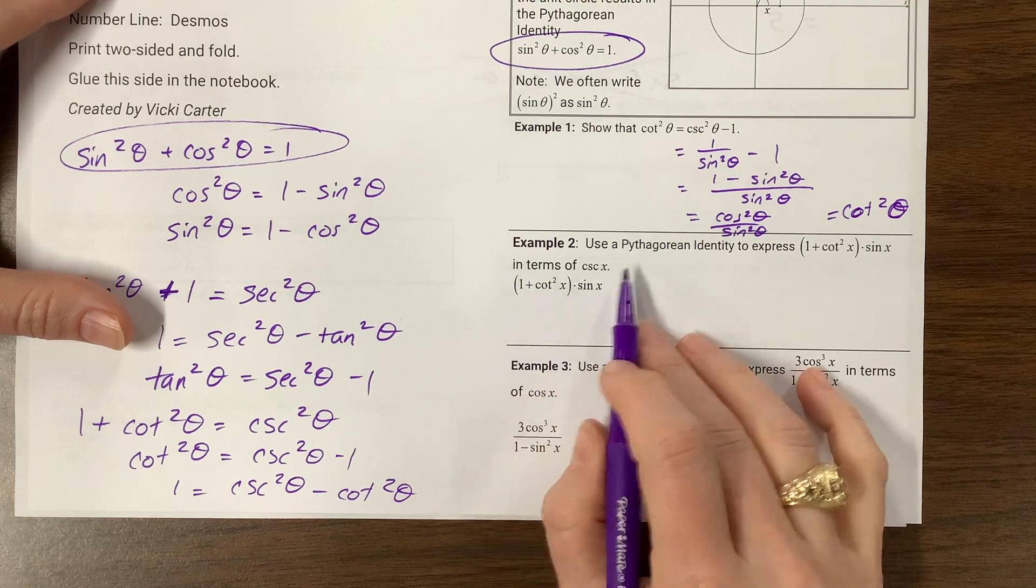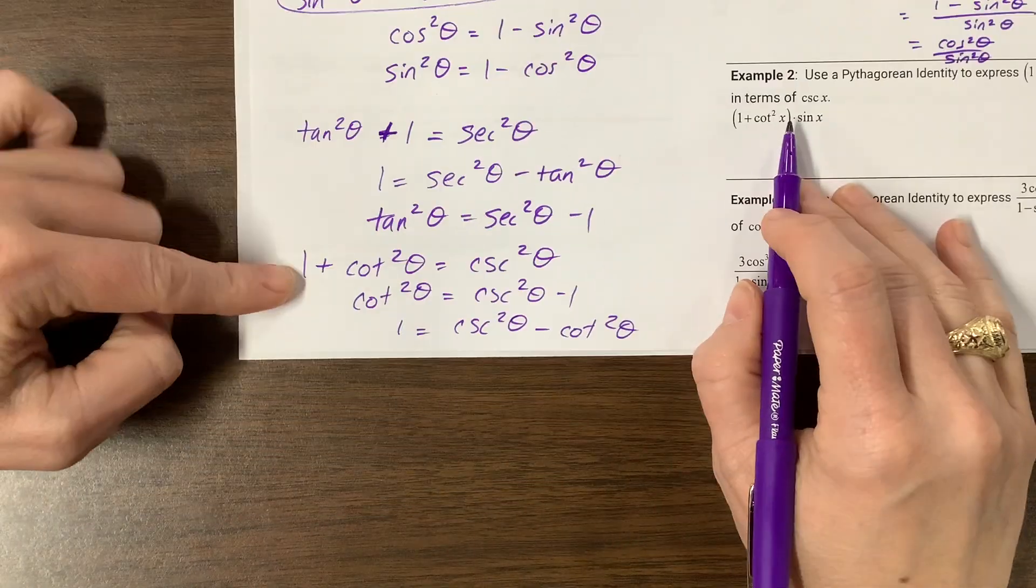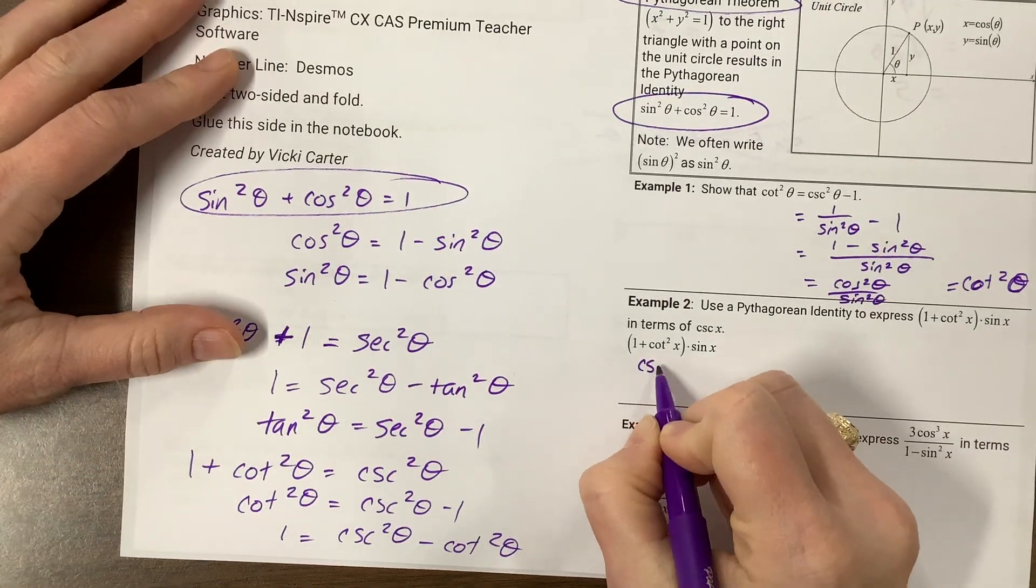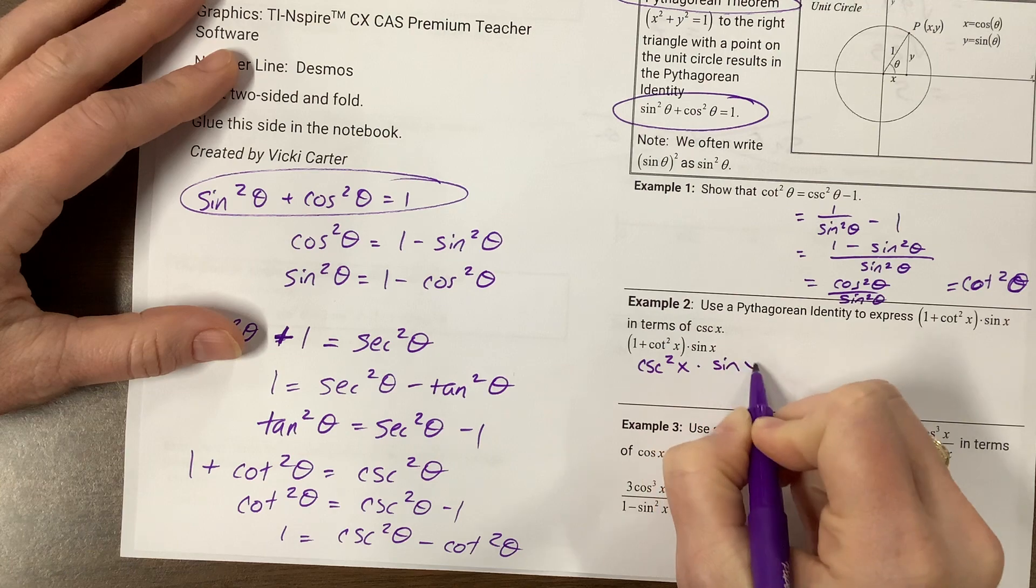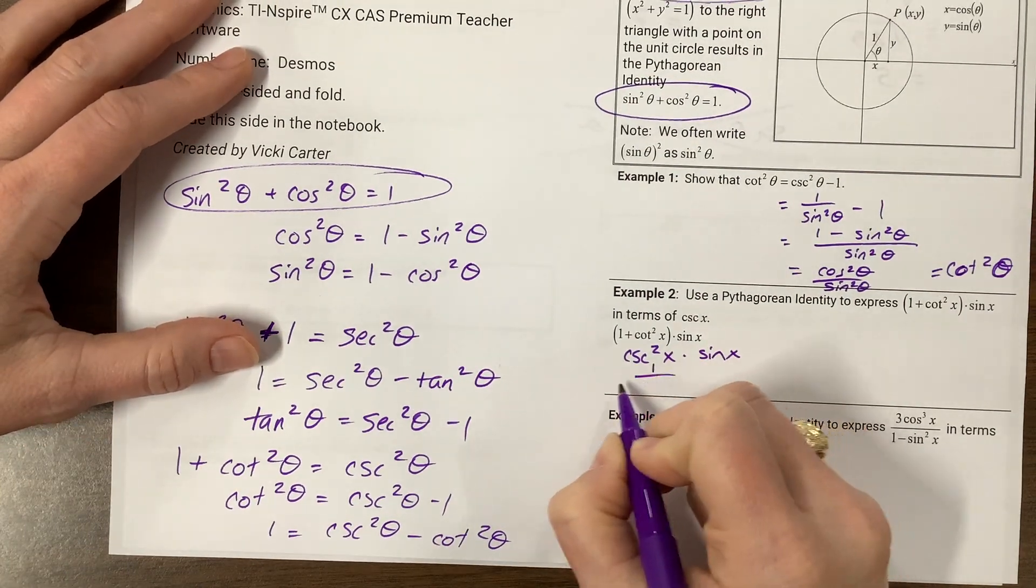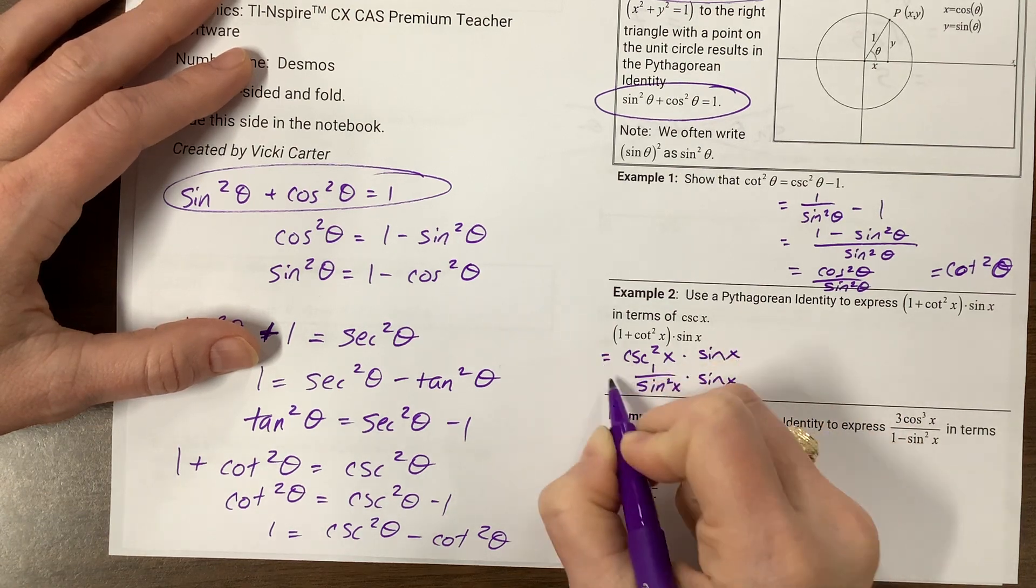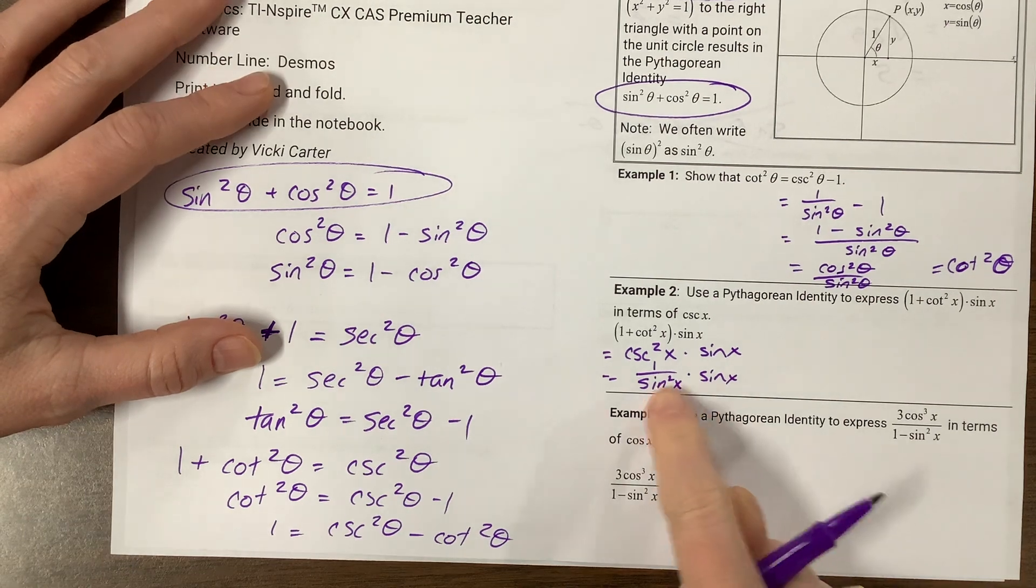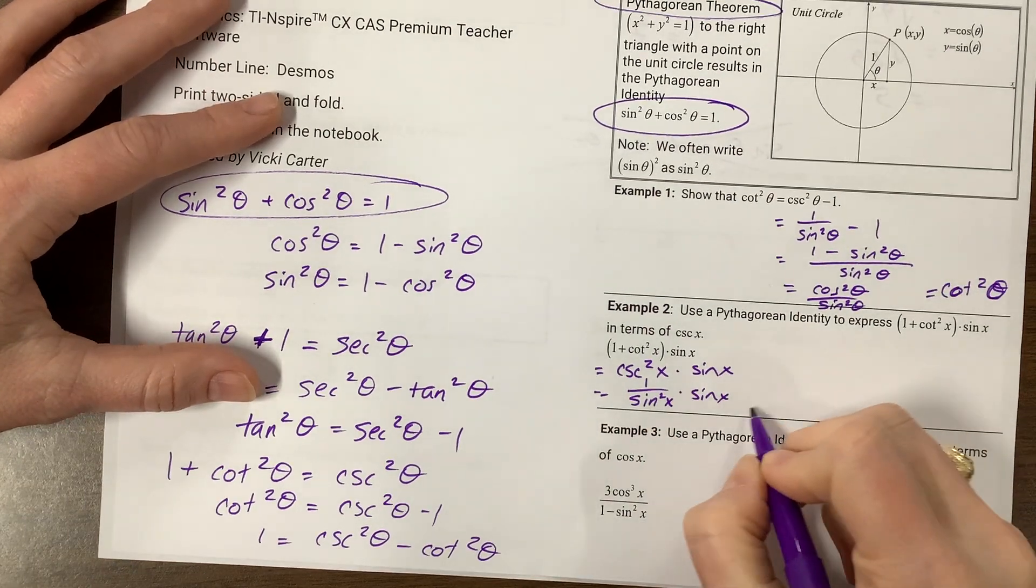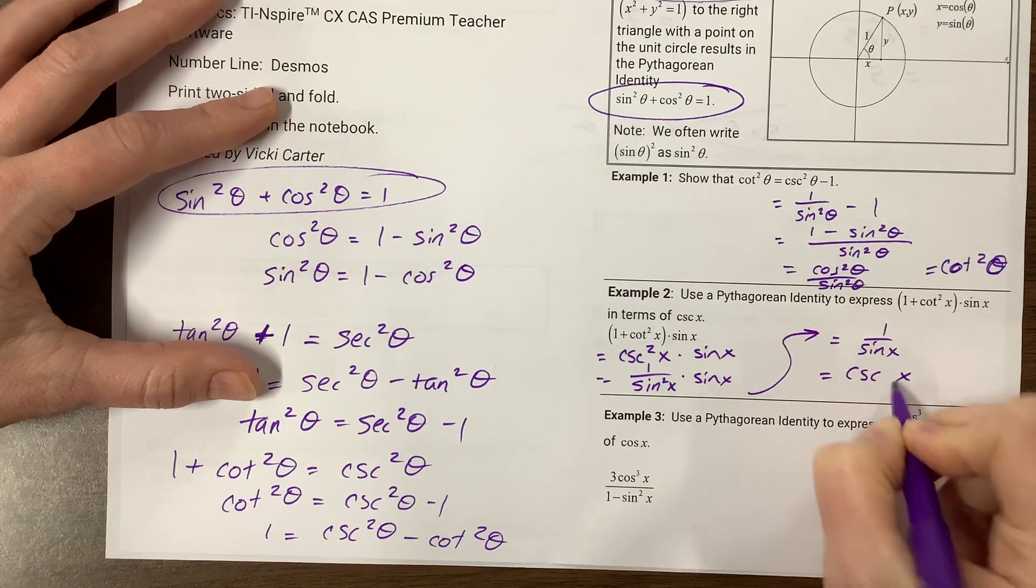Use Pythagorean theorem to express this in terms of cosecant. Okay, one plus cotangent squared, I would expect you to tell me that one plus cotangent squared is equal to cosecant squared. Cosecant squared x times sine x. Well, cosecant is one over sine, so cosecant squared is one over sine squared x times sine x. And then there's one sine in the top, and there are two sines in the denominator, giving us, this is one over sine x, which is cosecant x.